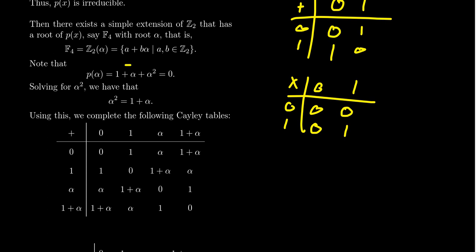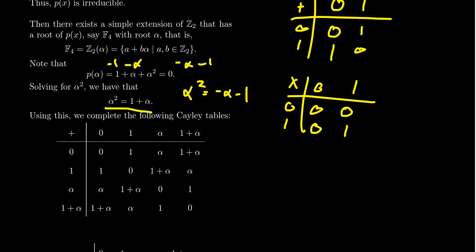Subtracting α and 1 from both sides gives α²= −α−1. But in Z2 there is no such thing as negative 1 — negative 1 is just positive 1 — so −α−1 is really just α+1. Because of this relationship 1+α+α²=0, we get that α²=1+α.